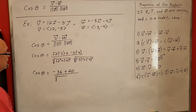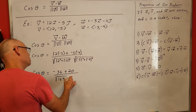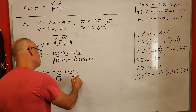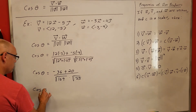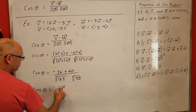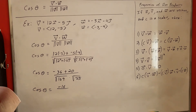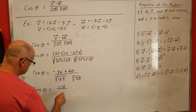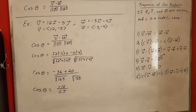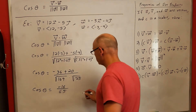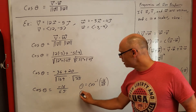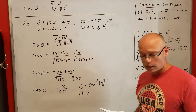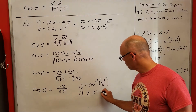Cosine of theta equals negative 16 over the square root of 169 times the square root of 25, which simplifies to negative 16 over 13 times 5, or negative 16 over 65. Therefore theta equals the inverse cosine of negative 16 over 65, which is approximately 104.3 degrees.